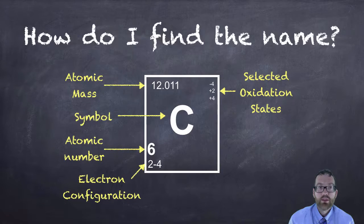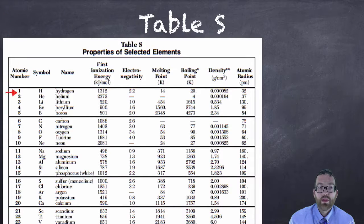So how do you find the name of an element if you were just looking at the periodic table and you had a square such as this? Each element has an atomic number and it's specific to that element. So our atomic number is six. If you didn't know that C is carbon, you could look at the atomic number six.